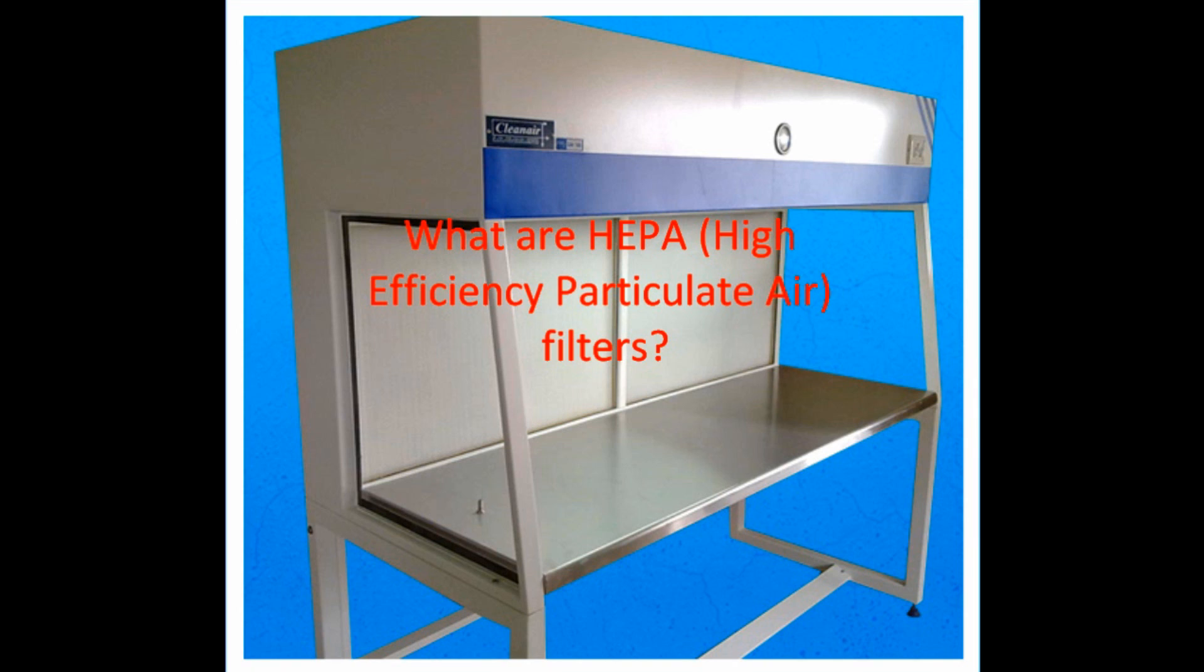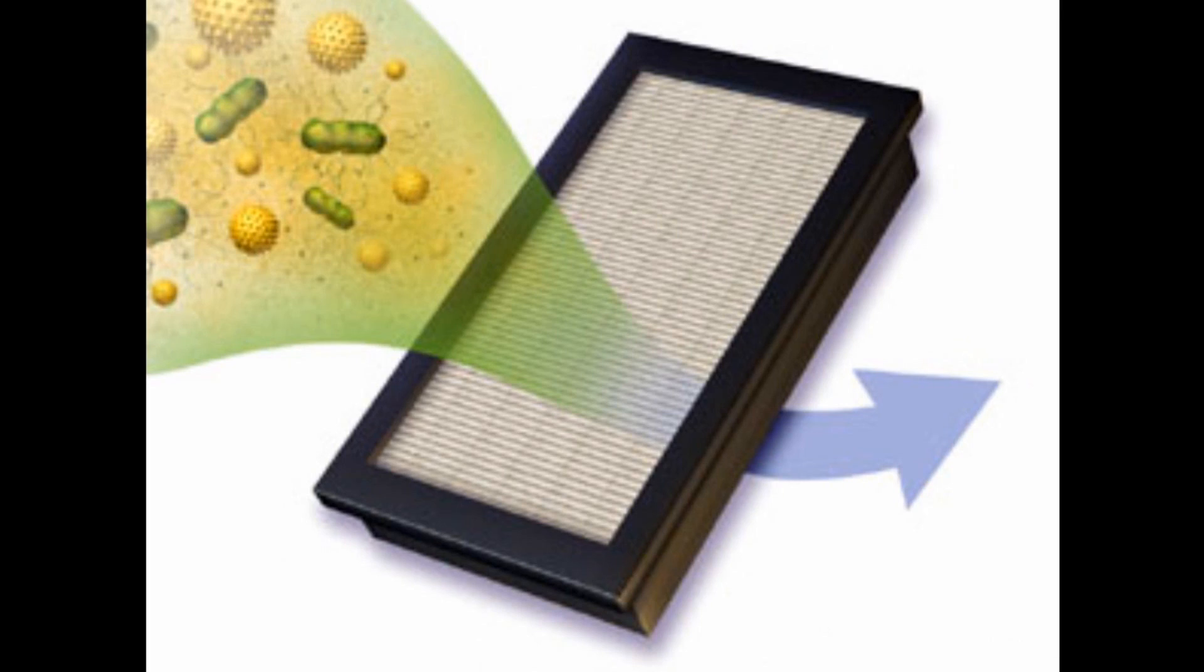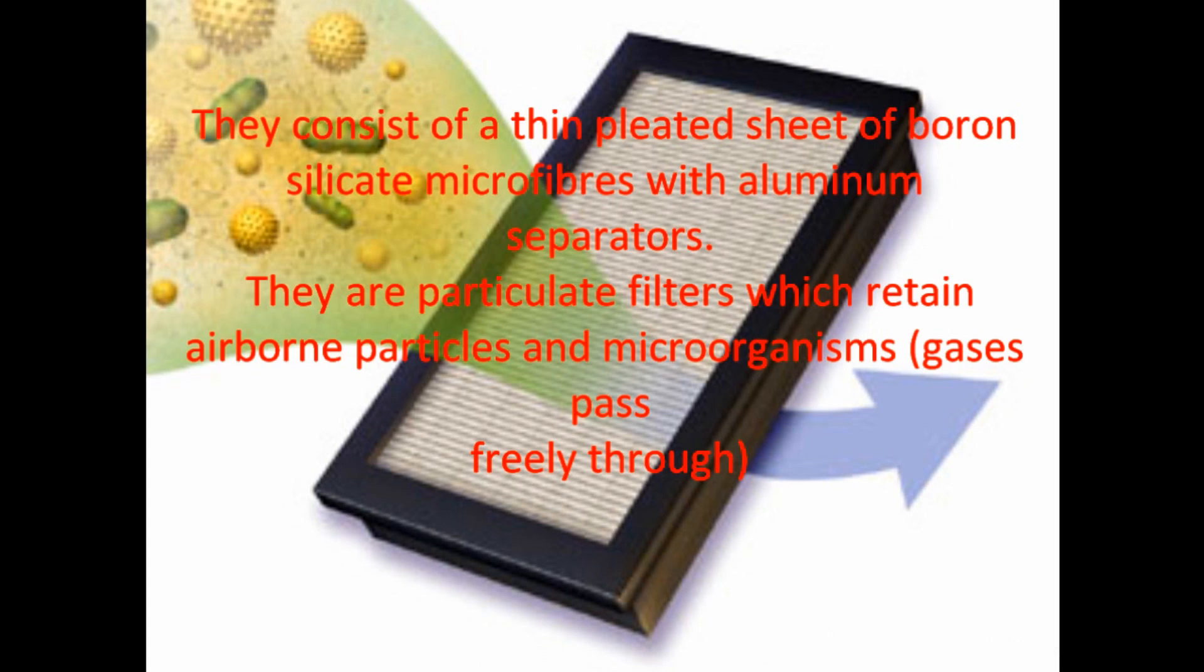What are HEPA filters or high efficiency particulate air filters? A HEPA air filter can reduce the amount of airborne allergens. They consist of a thin pleated sheet of boron silicate microfibers with aluminium separators. They are particulate filters which retain airborne particles and microorganisms.